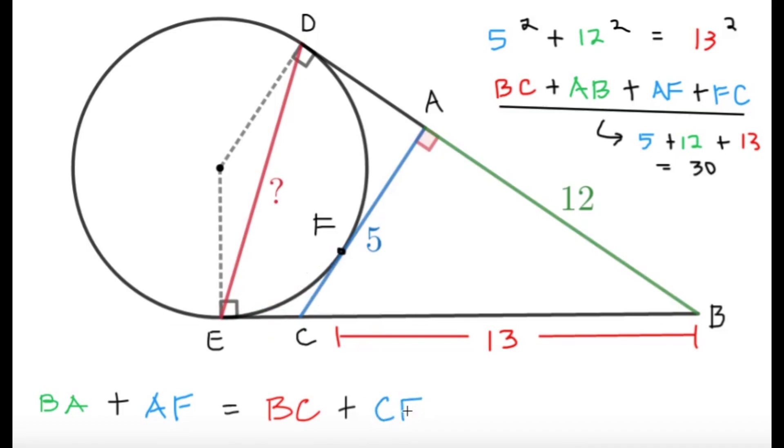Now with this information, it's very nice because BA, AF, BC and CF, as you can see here, if I add them up, that should give us the perimeter of this right triangle ABC. The perimeter is 5 plus 12 plus 13, which is 30. So it is expected that BA plus AF and BC plus CF should both be 15 each.